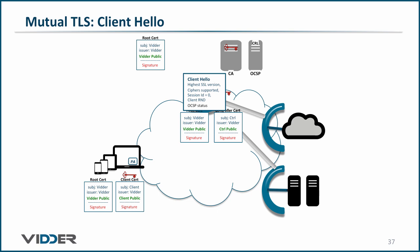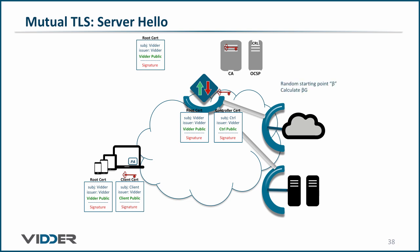That sets up for the server hello. Based on the cipher suite VITR uses, part of the server hello will be the server's Diffie-Hellman composite number. Therefore, the server must randomly generate the point beta on the suite's elliptic curve and apply that to the generator G. The server hello also requires a stapled OCSP response. Therefore, the controller sends the controller's certificate's serial number and a couple of other things to the OCSP responder.